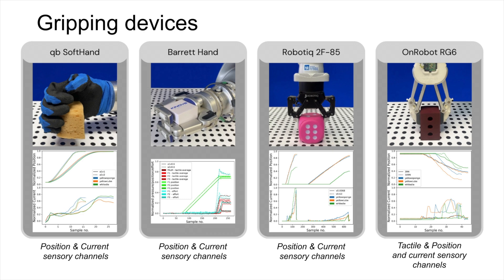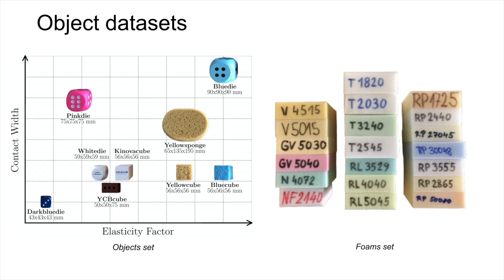The anthropomorphic hands enable diverse grasping configurations. The first test included nine objects with varying sizes and deformability. The second set comprised of 20 polyurethane foam blocks, all similar in size, but differing in elasticity and density.